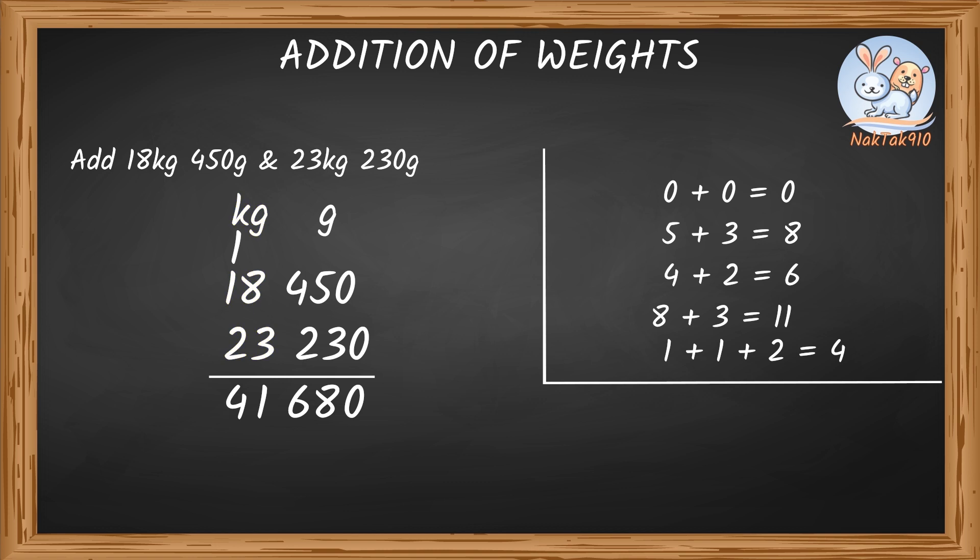So, the sum of 18kg 450g and 23kg 230g is 41kg and 680g.